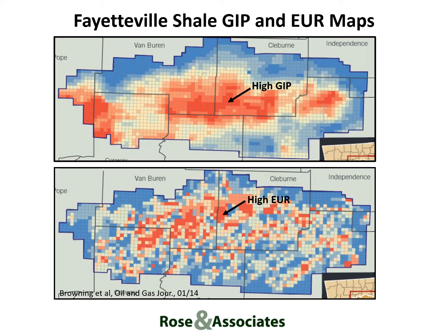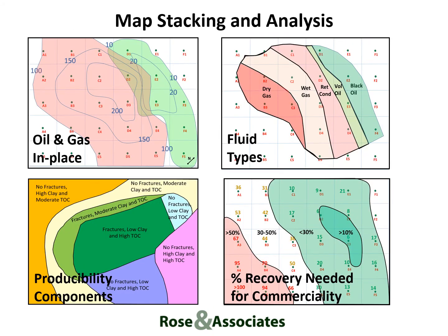As a result, maps of both volumetric and producibility components have to be generated and stacked to identify the most prospective areas. In this course, teams are created and provided with a series of maps that they contour. Stacking these maps provides insights into the volume of hydrocarbons in place, the hydrocarbon fluid types present, and the impact of producibility components. These maps are then combined with basic cash flow analysis to determine which areas have sufficient resource density to support profitability, as indicated by whether the percent recovery needed for commerciality is reasonable.